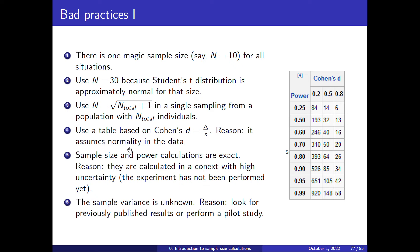Another bad practice is thinking that sample size and power calculations are exact. When you calculate n=13, that is not written in stone. It was calculated under high uncertainty, especially regarding sigma, which is unknown before performing the experiment. If the sample variance is unknown, there is no way to compute the sample size — it is like designing an elevator for aliens without knowing their size distribution.